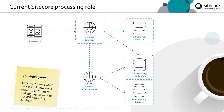Let's take a look at the architecture of the current SciCore processing role. Over on the left we have interactions occurring — on the website itself, a mobile device, or other channel. Those interactions are sent into the XConnect collection server. XConnect collection stores these in the XDB collection database and also records some data to the processing pools database for the processing role. The SciCore XDB processing role reads events logged to the processing pools database, pulls data out of XConnect collection, does its aggregation, and then populates the XDB reporting database, which is how we drive our reports.